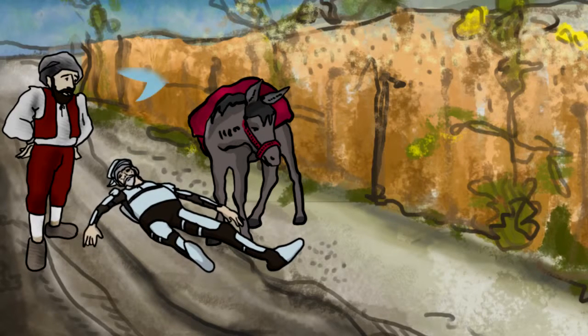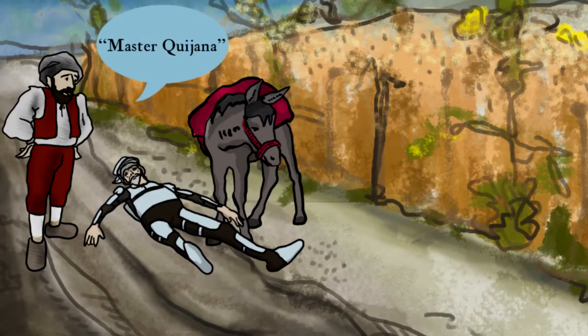Note how the farmer indicates the true identity of Don Quixote. Master Quijana, he calls him, and then he lifts him onto his ass. Note also that Don Quixote returns home, not on Rotinante, but an anonymous ass. We'll try to underscore the ass theme, but it would be a good idea to start registering every appearance of this controversial animal.